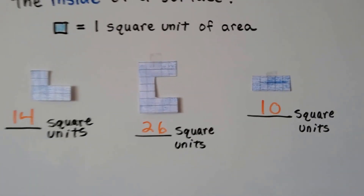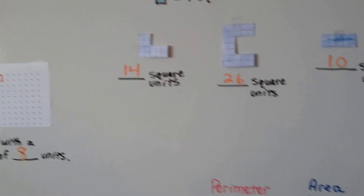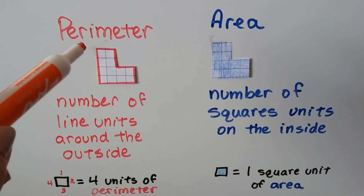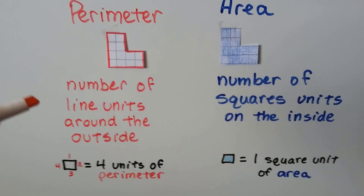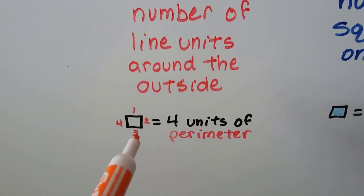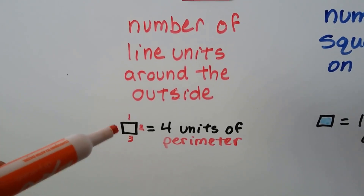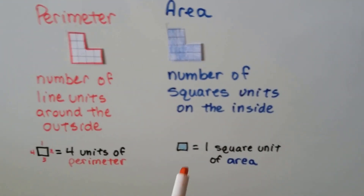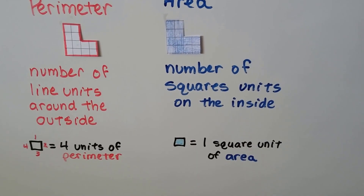Do you see the difference? The area is the squares on the inside and the perimeter is the lines going around the outside. Perimeter is this red line going around the outside. Area is everything that's on the inside. Perimeter is the number of line units around the outside. For this square, there's four units of perimeter — four little lines going around the outside like a fence. For area, it's the number of square units on the inside — just one square unit of area.